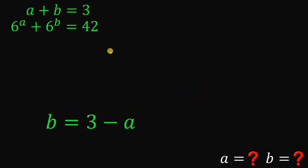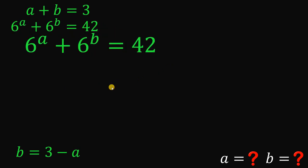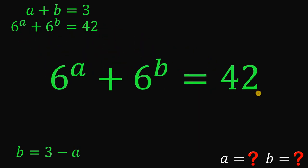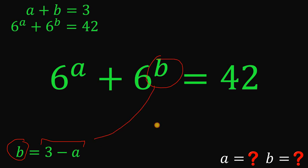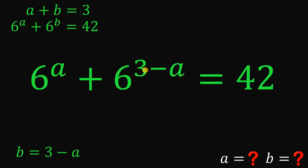Let's set aside this result and now get the second equation: 6 raised to the power of A plus 6 raised to the power of B equals 42. We know B equals 3 minus A, so we can replace B with 3 minus A. So we have 6 raised to A plus 6 raised to the power of 3 minus A equals 42.